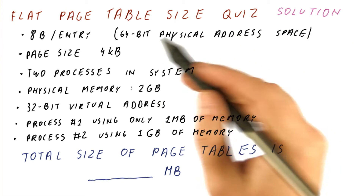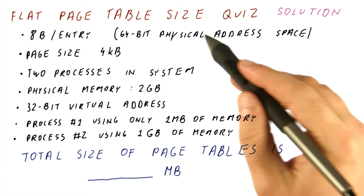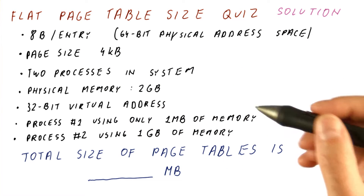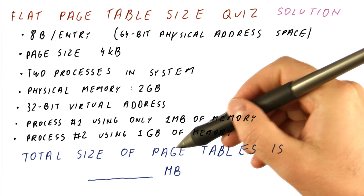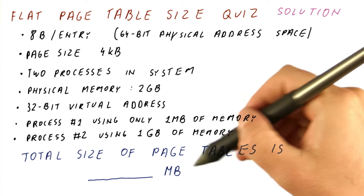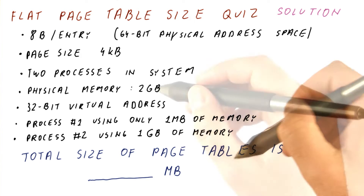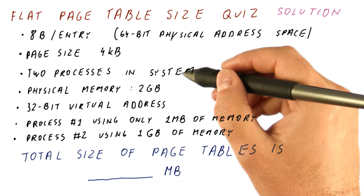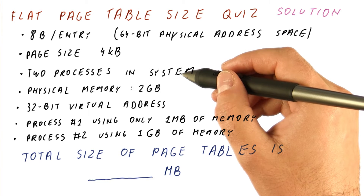Let's look at the solution to our flat page table size quiz. We are asked what the total size of the page tables in the system is. There are two processes in the system, so there will be two page tables — we need to add up their sizes.